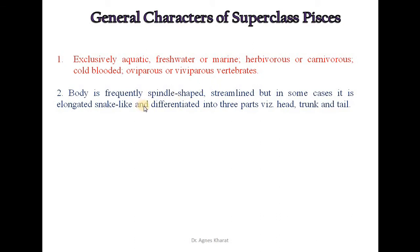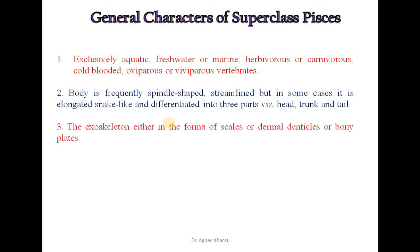The body is frequently spindle-shaped and streamlined, but in some cases it is elongated, snake-like, and differentiated into three parts: head, trunk, and tail. The exoskeleton is either in the form of scales, dermal denticles, or bony plates.